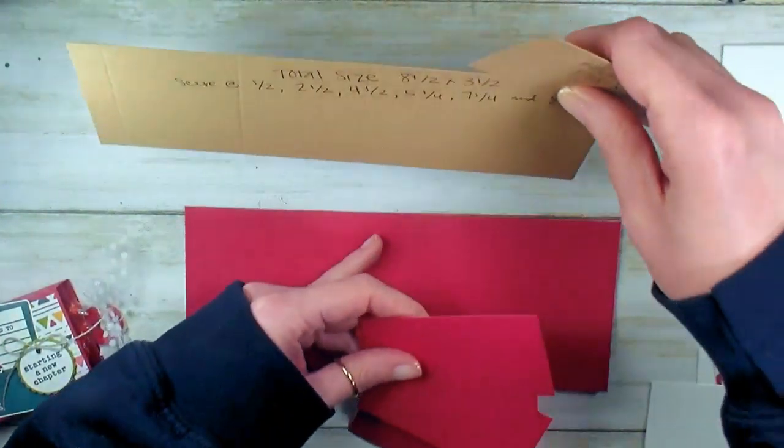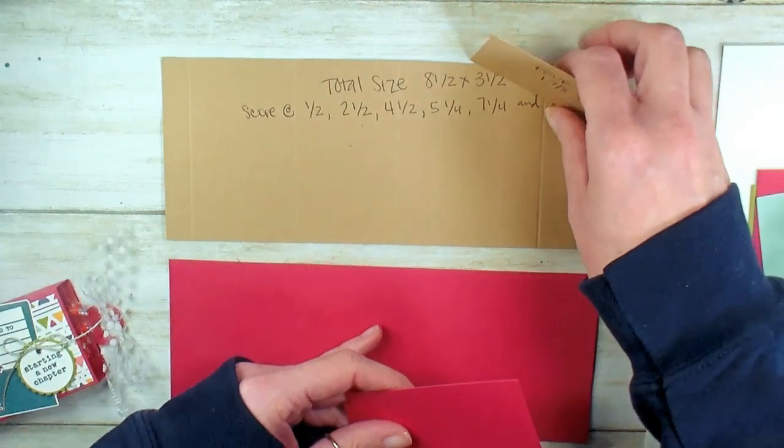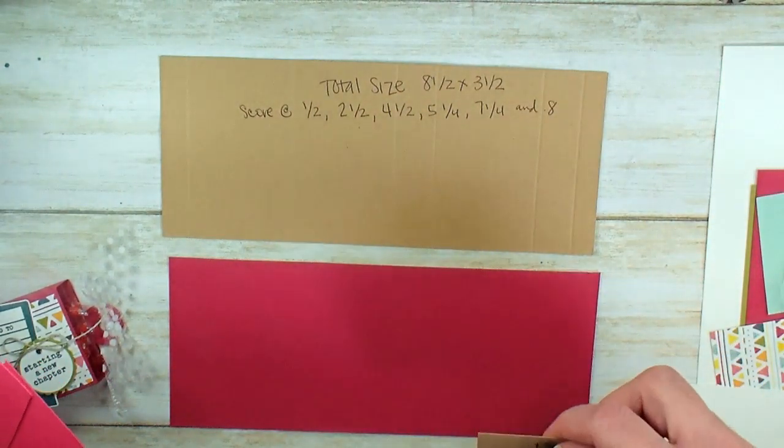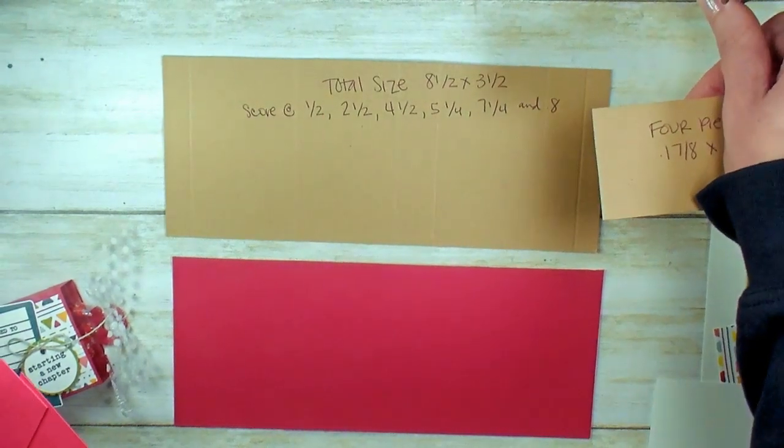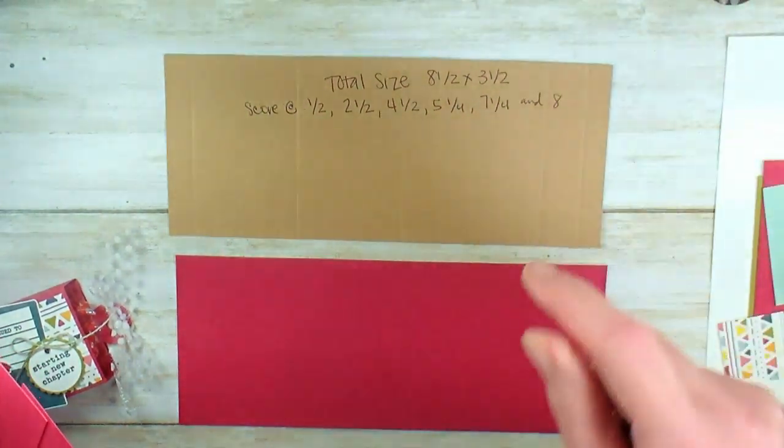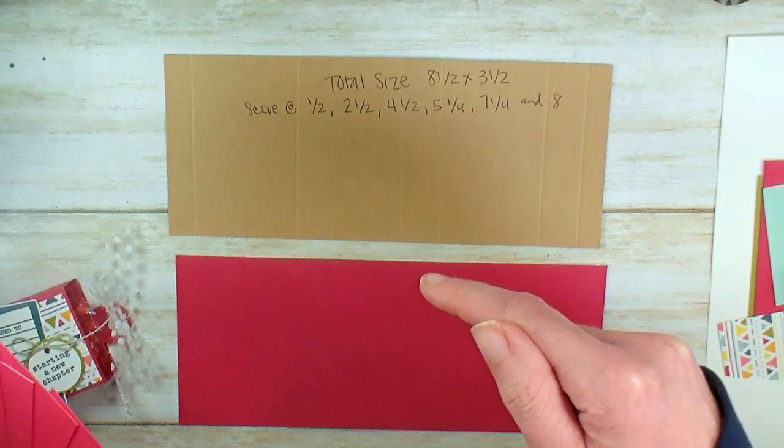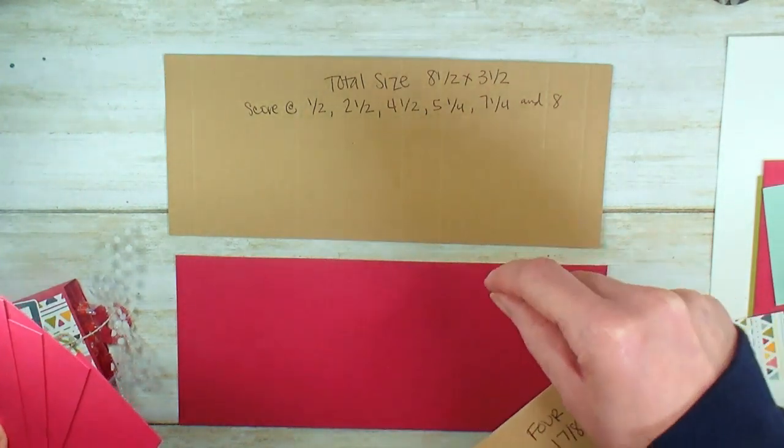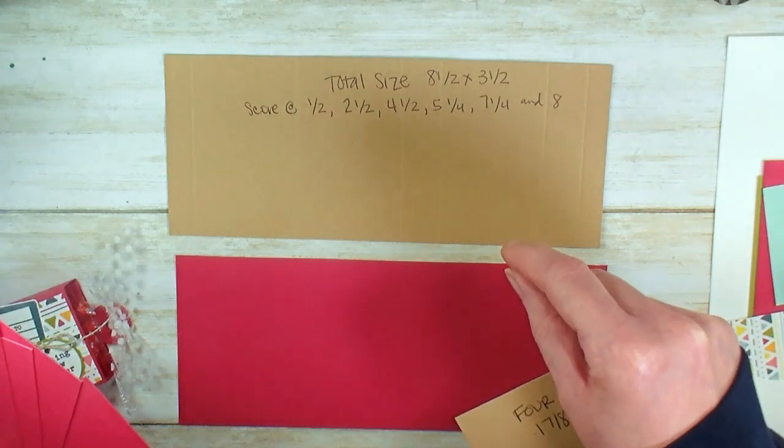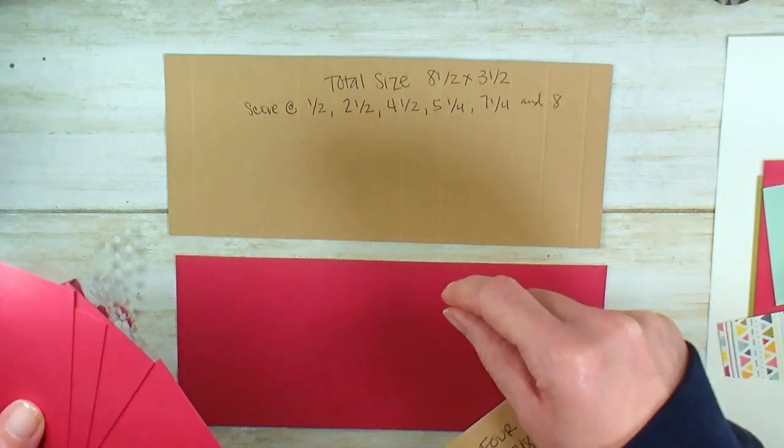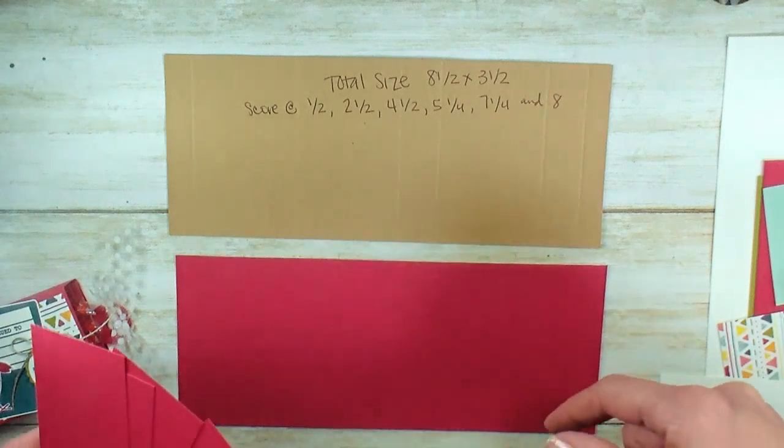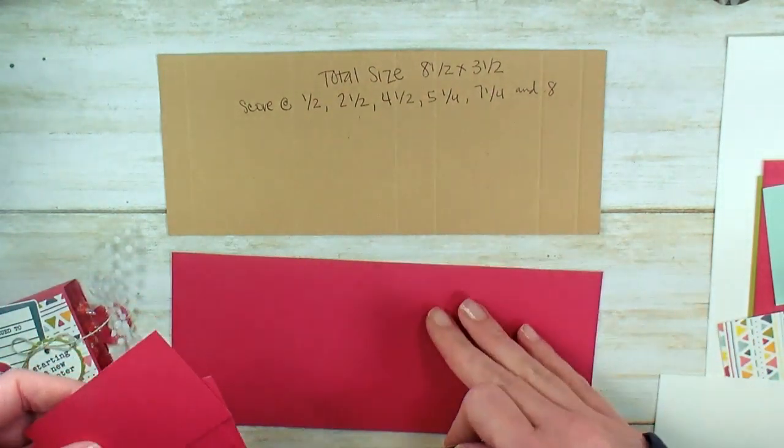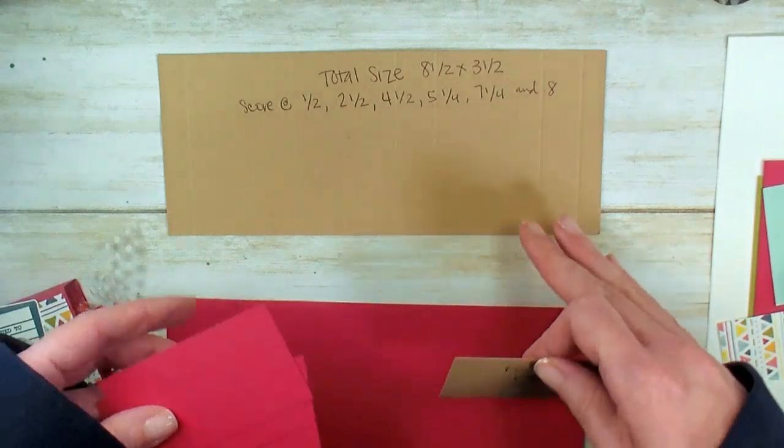Here's a template. The printable project sheet has a picture of this template. It has measurements, supply lists, full-color photos, and that is available to print from the blog. Just look for the link if you're on YouTube. The link to print the project sheet is embedded underneath the video, and you can just print it. It's a great resource, and it's free at kitchentablestamper.com.